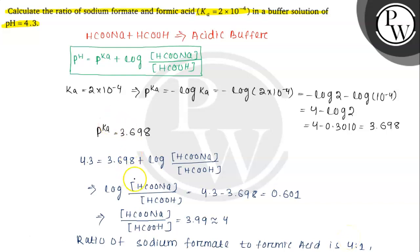So here log HCOONA divided by HCOOH value is 0.601. We have to find out, if log 2 value is 0.3010, then log 4 value will be log 2 times log 2, so it will become 0.601. So the value of HCOONA divided by HCOOH will be 4. Hope you understand it well. Best of luck.